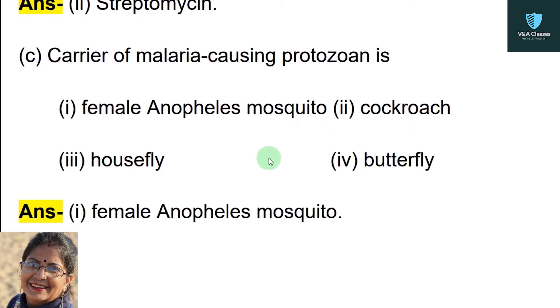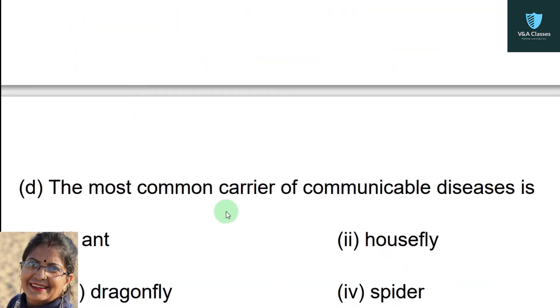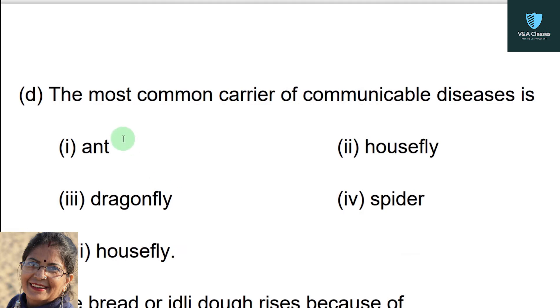Next question: carrier of malaria-causing protozoan is — first option female Anopheles mosquito, second option cockroach, third option house fly, fourth option butterfly. Correct option is female Anopheles mosquito.